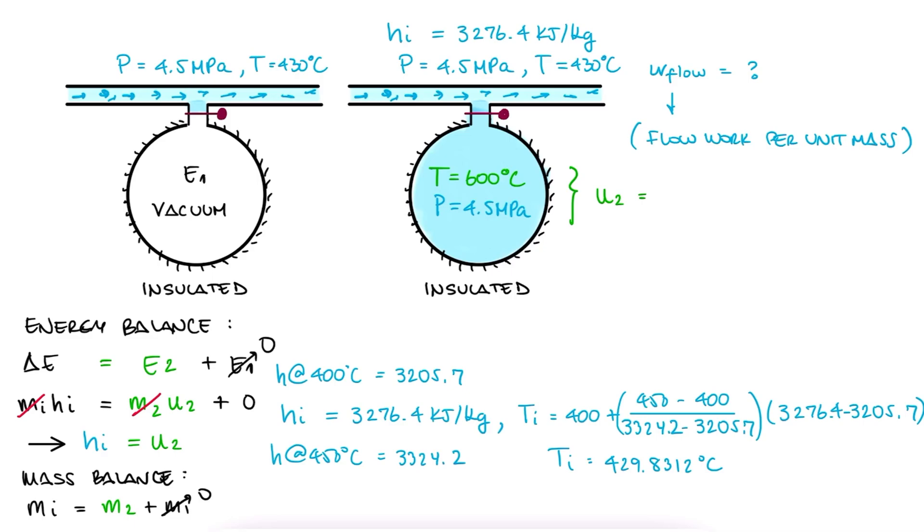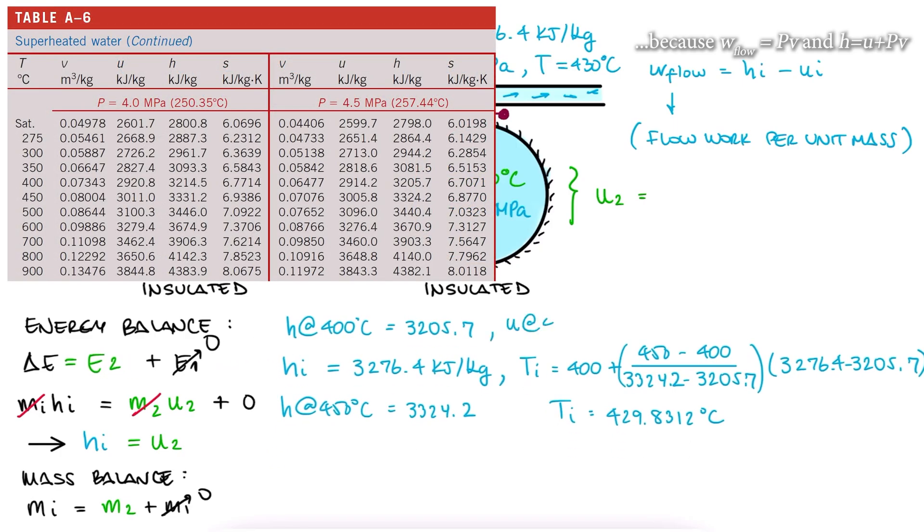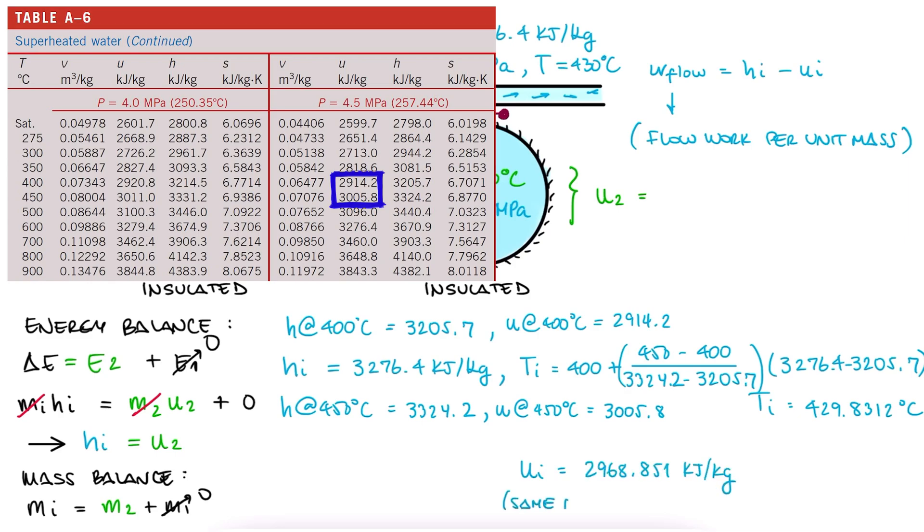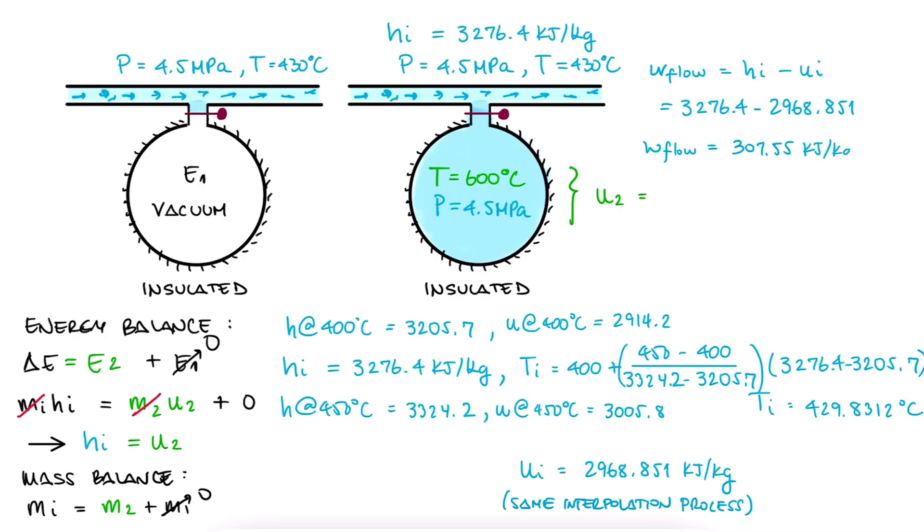The flow work per unit mass would just be the difference between the specific enthalpy and the specific internal energy of the line. So, we do the same interpolation for the internal energy at 430 degrees Celsius to obtain Un. We subtract these values and obtain the flow work.